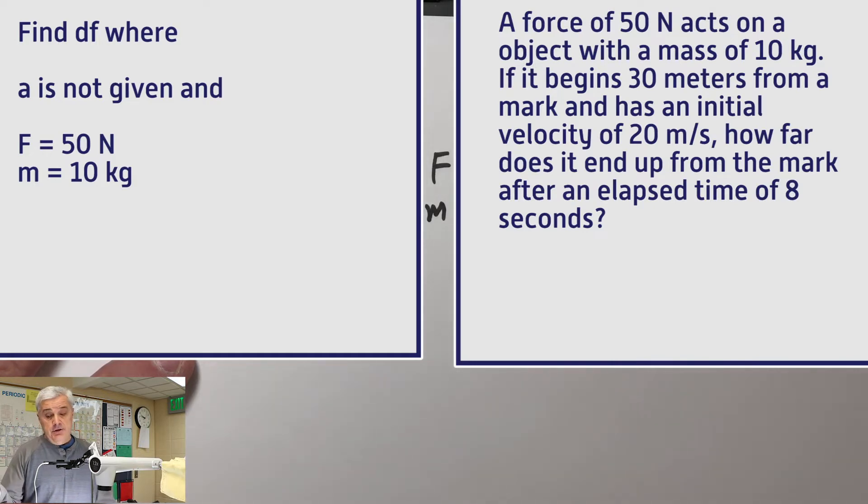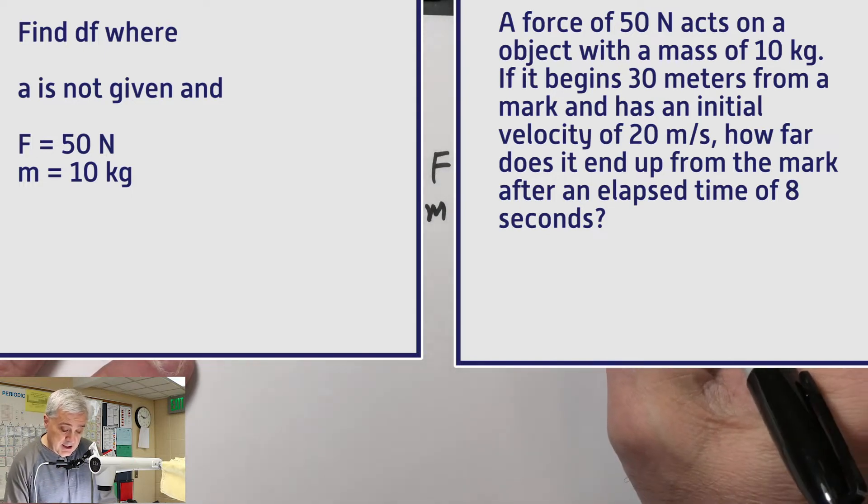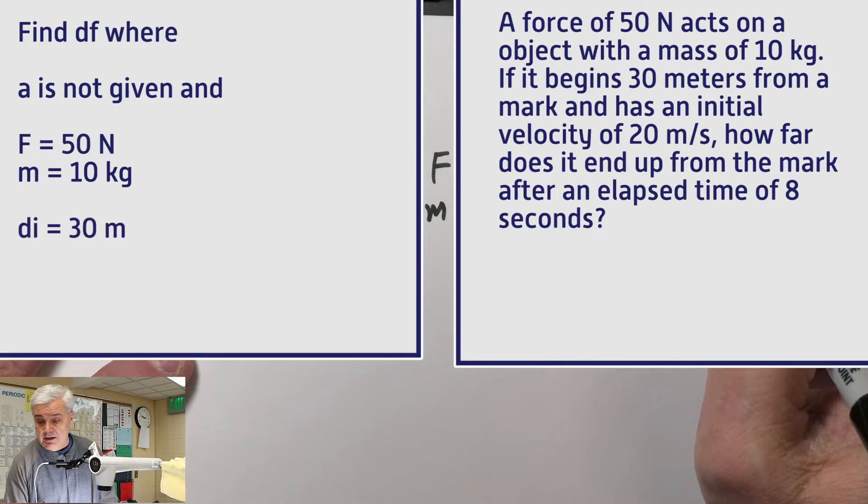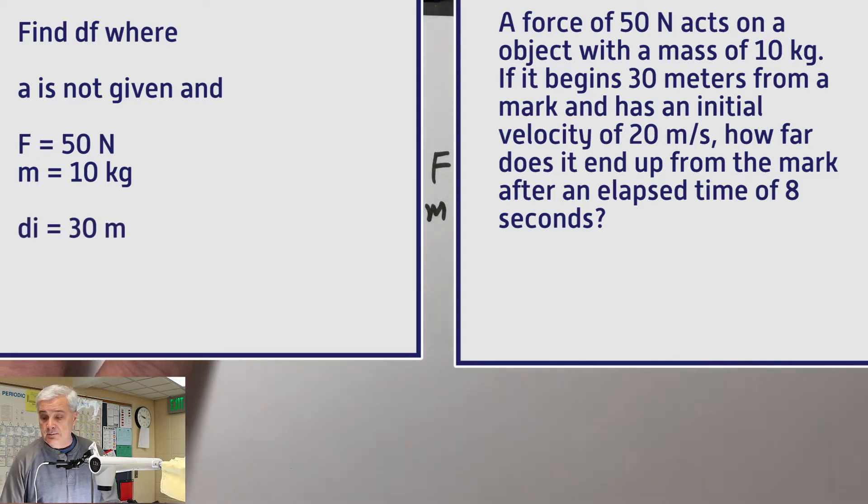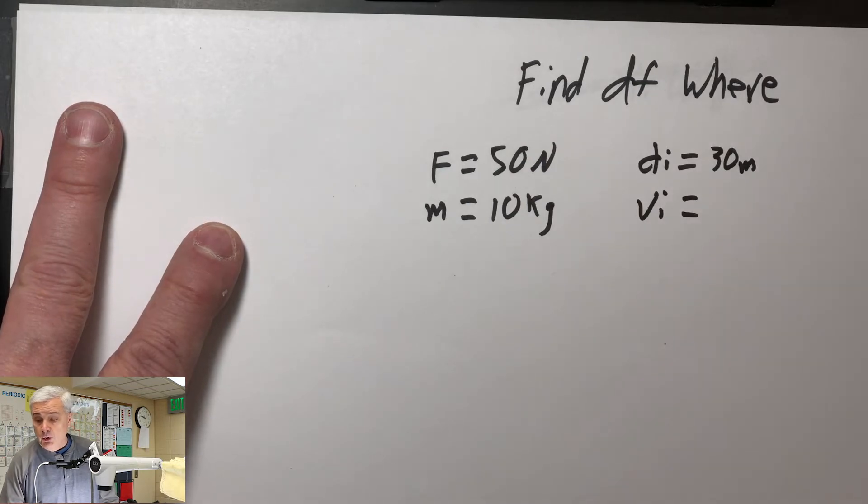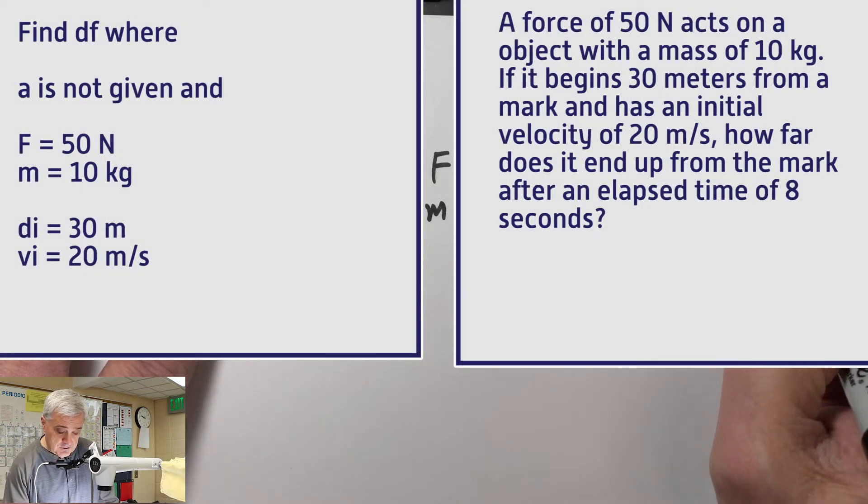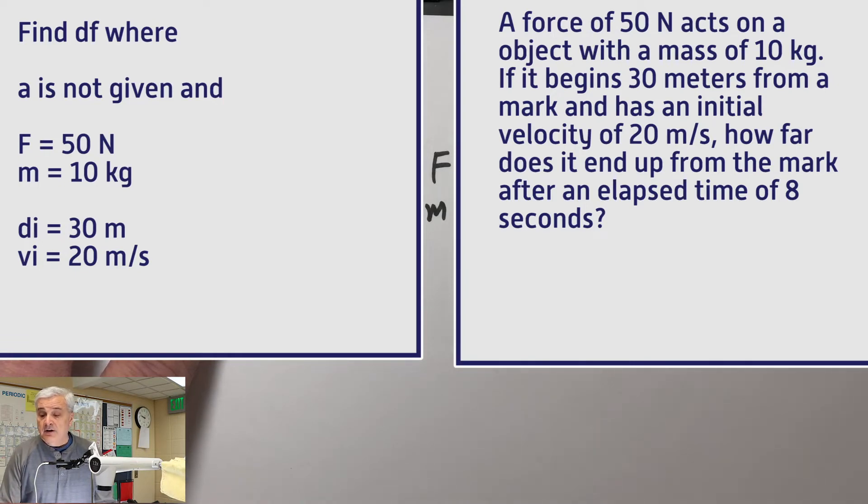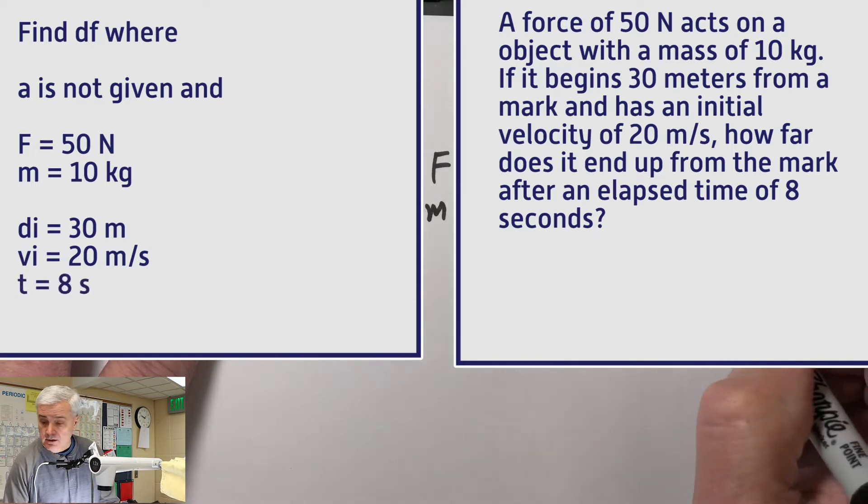It begins 30 meters from an initial mark. That's going to be an initial something. It begins 30 meters, so that's distance. Initial distance is 30 meters from some mark, and it's already moving. It has an initial velocity, v sub i equals 20 meters per second. How far does it end up after an elapsed time of 8 seconds? T equals 8 seconds.